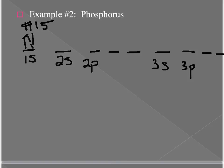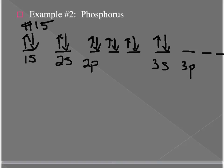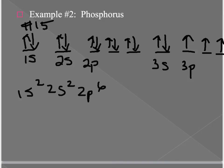Filling in order of increasing energy: 1s², 2s², 2p⁶, 3s². That brings us to 12 electrons. Now Hund's rule comes into play — the remaining electrons distribute themselves into the individual 3p orbitals before pairing up. So phosphorus's full electron configuration is 1s², 2s², 2p⁶, 3s², 3p³.